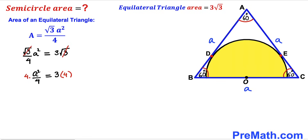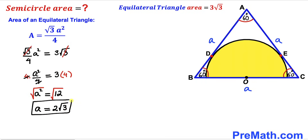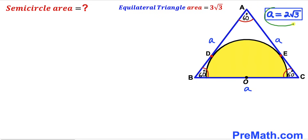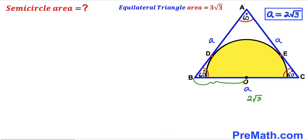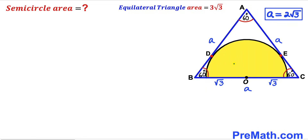Taking the square root of both sides, our side length a turns out to be 2 times square root of 3 units. So the side length BC of this equilateral triangle is 2 times square root of 3. Since O is the midpoint, segment BO is half of that, which is square root of 3, and likewise OC is square root of 3 as well.